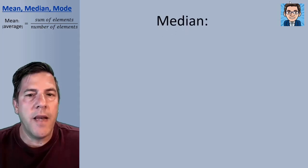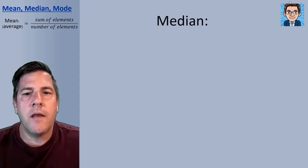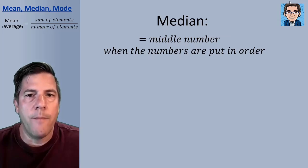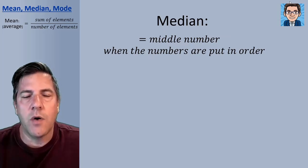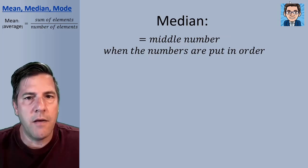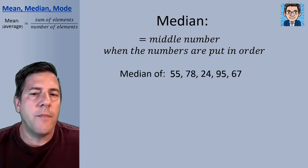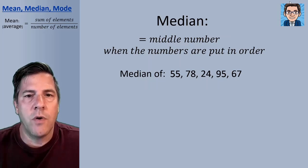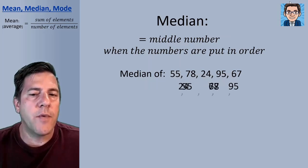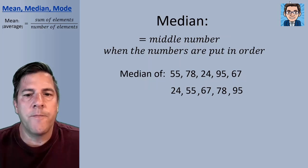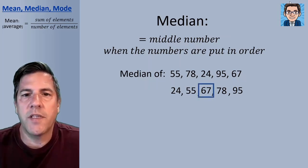Next let's take a look at median. The median is simply going to be the middle number. When we take all the numbers and put them in order, the middle number is going to be the median. So half the numbers are going to be less than the median, and half the numbers are going to be greater than the median. If we rearrange the numbers in order, it makes it a lot easier to see what the middle number is. For this group of numbers, the middle number is just going to be 67.